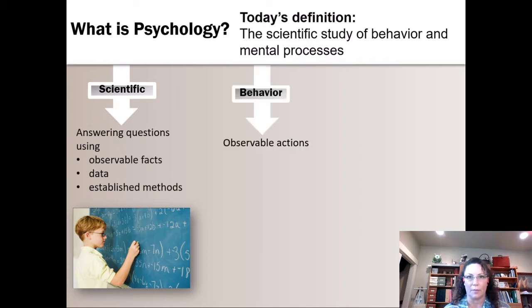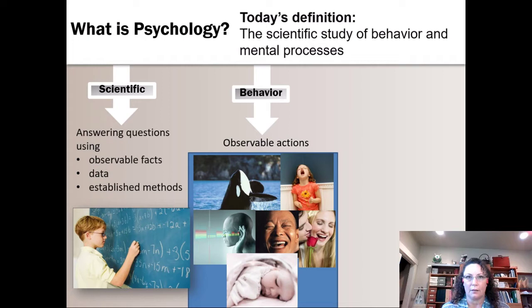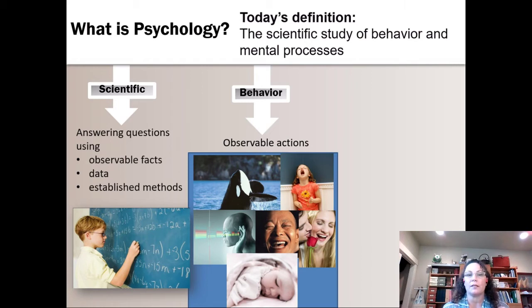Now, you might be thinking you know what behavior is. But it's really important with humans and animals to talk about what we exactly mean by observable actions. These would be things that we could directly see, with no interpretation or guessing. So I've got a picture of a whale breaching. All you could say about that is that the whale left the water and then landed back down on it. We don't know why.